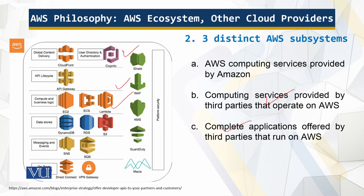Complete applications offered by third parties run on Amazon Web Services. You can use these services — often as SaaS — over a network without having to install them on your own hardware. Many companies host their applications on AWS, drawn to it for the same reasons end users are: low cost, ease of use, and high horizontal scalability.